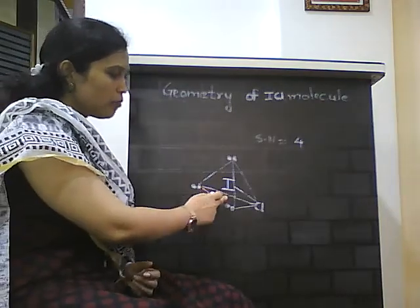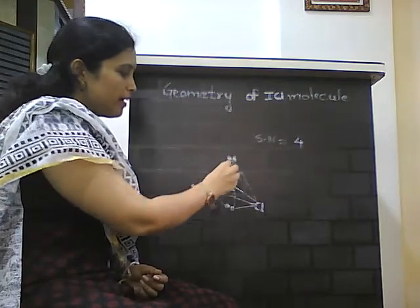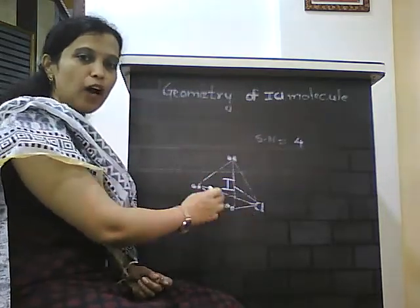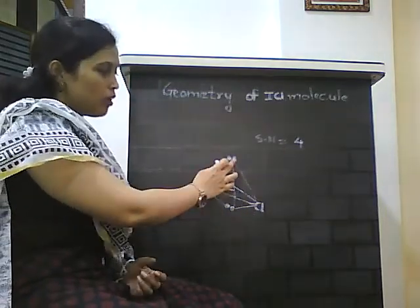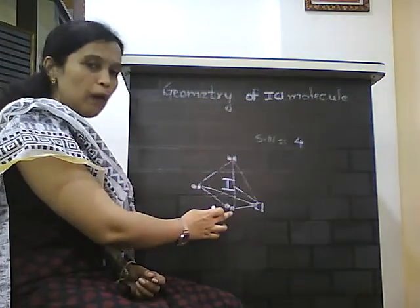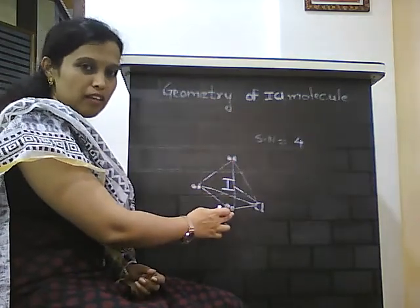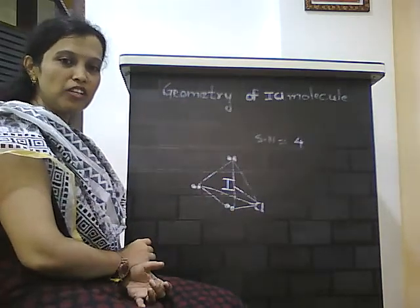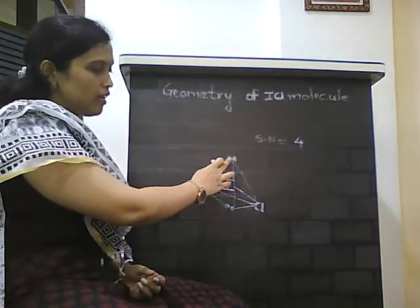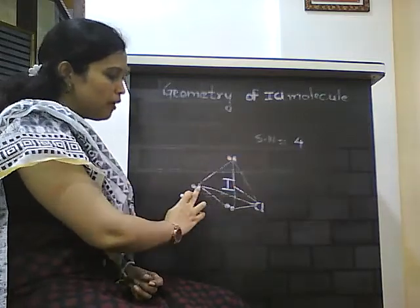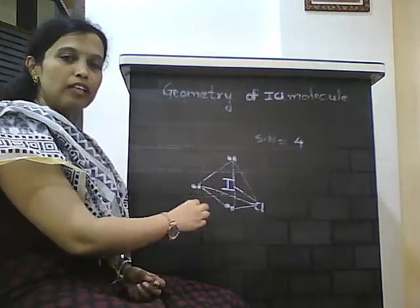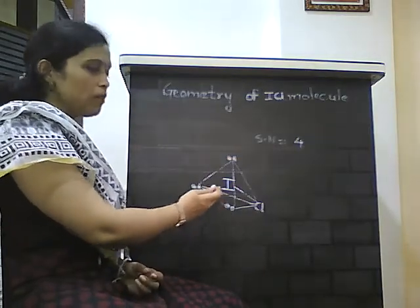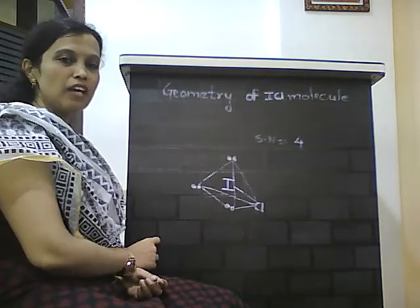Here, in this diagram, I have shown the tetrahedron where out of the 4 vertices, 3 vertices have lone pairs present. On the basis of valence shell electron pair repulsion, there is repulsion between lone pairs, and therefore they position away from each other to minimize the repulsion.